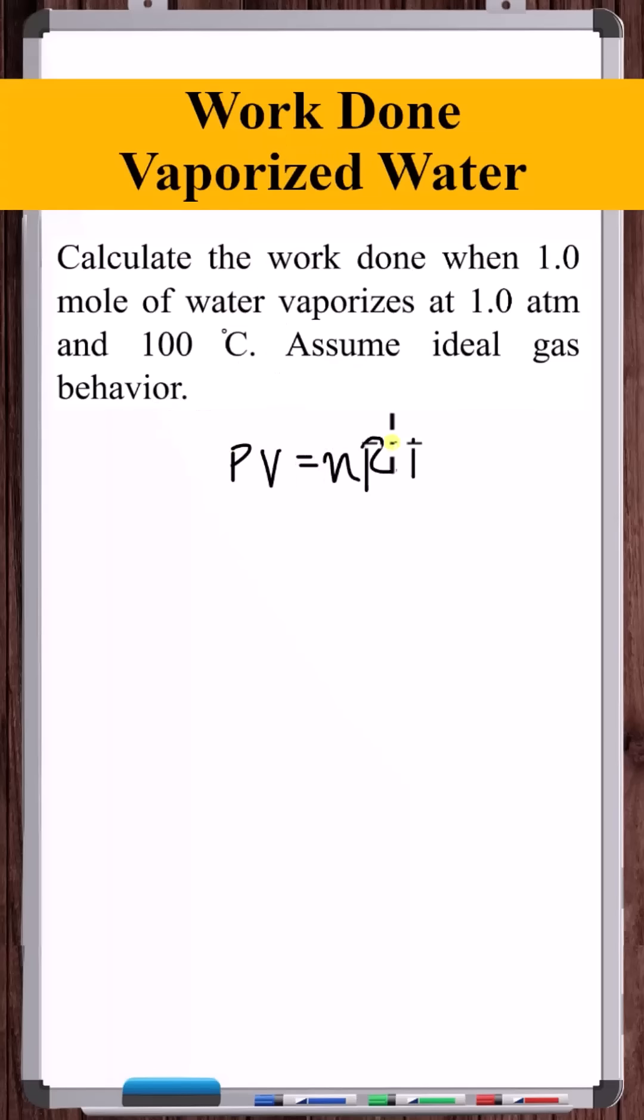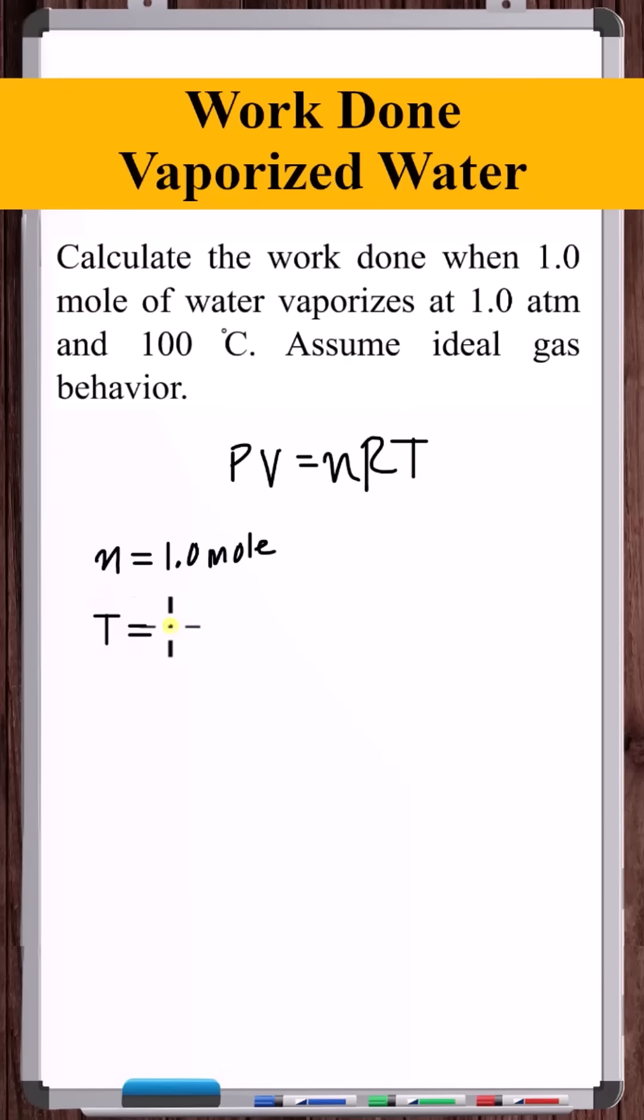We'll use the ideal gas law. What is the volume of one mole of gas at temperature 373 Kelvin and one atmosphere pressure?